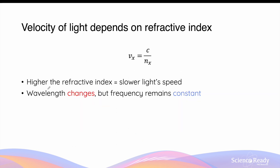Refraction not only changes the direction of the light ray, it also changes the light speed. When light travels from air or vacuum into a new medium, the velocity in the new medium is given by the speed of light in air divided by the refractive index of the new medium. Therefore, the new velocity is inversely proportional to the refractive index — the higher the refractive index, the slower the light speed will be.